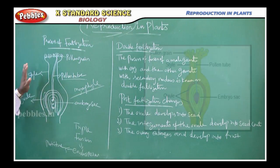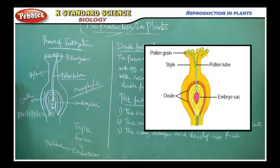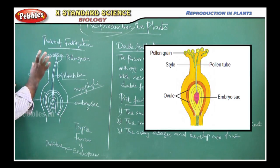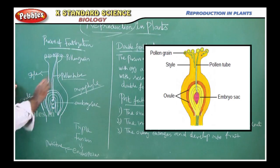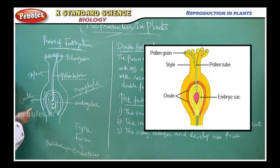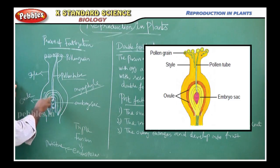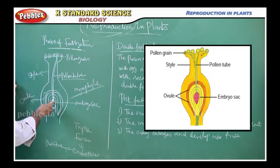This is an expected diagrammatic question for the board examination. They may give this diagram and ask you to redraw and label the parts: pollen grain, pollen tube, style, ovule, embryo sac, and the opening region of the ovule, which is called the micropyle.